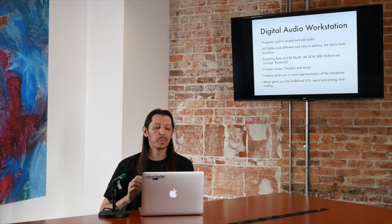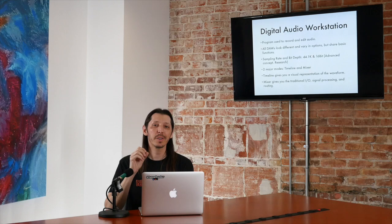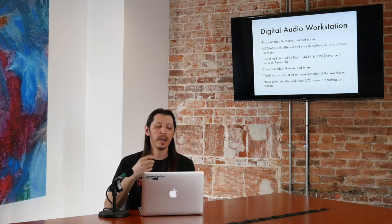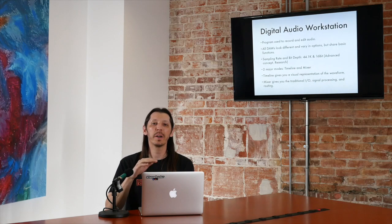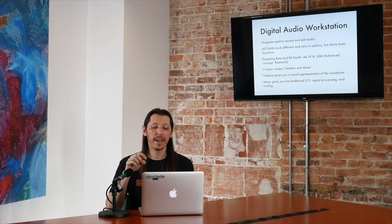A digital audio workstation, or DAW, is the program used on your computer to record and edit audio. All DAWs look different and have varying options. One thing I didn't cover last week — and I won't go deep into now, but I want you to be aware of — is sampling rate and bit depth, which you'll have to select when you start a new session. There's a lot of content online about it; it's a very advanced topic. For our purposes, the sampling rate is going to be 44.1K and the bit depth is going to be 16-bit. I'll talk about it more in later videos.